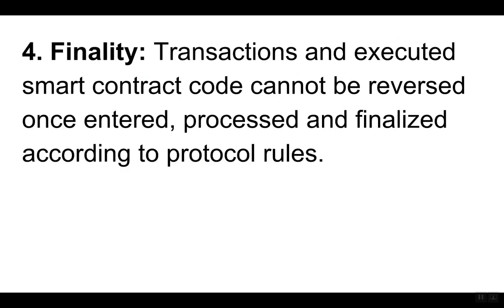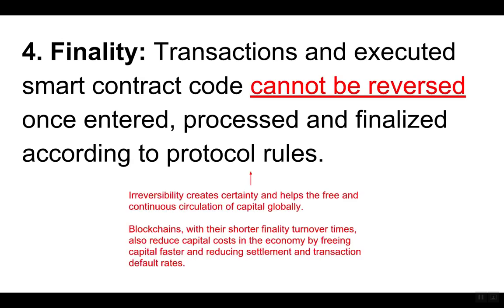Four, finality. Transactions and executed smart contract code cannot be reversed once entered, processed and finalized according to protocol rules. Irreversibility creates certainty and helps the free and continuous circulation of capital globally. Blockchains, with their shorter finality turnover times, also reduce capital costs in the economy by freeing capital faster and reducing settlement and transaction default rates.